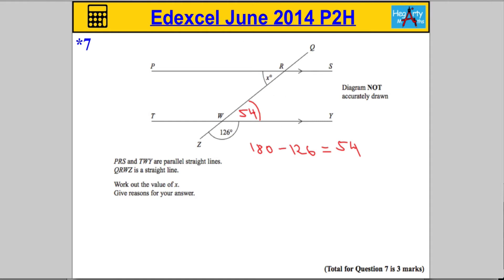The second thing I notice is a Z shape. You may have been told by your teachers to look out for these Z shapes when working with angles in parallel lines. This means this angle here has to be the same as this angle here, because they are alternate angles. So x has got to be 54 — x equals 54.